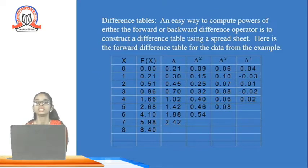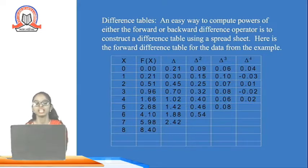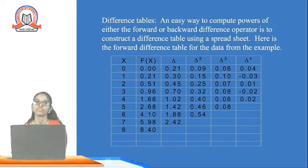The difference table is an easy way to compute powers of either the forward or backward difference operator using a spreadsheet. Suppose x values are 0 to 8 — find their f(x) values, then compute the first forward difference (Δ), then Δ², then Δ³, then Δ⁴.